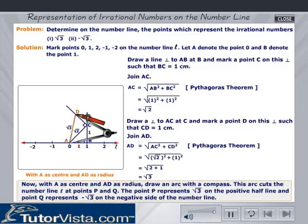Now with A as center and AD as radius, draw an arc with a compass. This arc cuts the number line L at points P and Q. The point P represents root 3 on the positive half line, and point Q represents minus root 3 on the negative side of the number line.